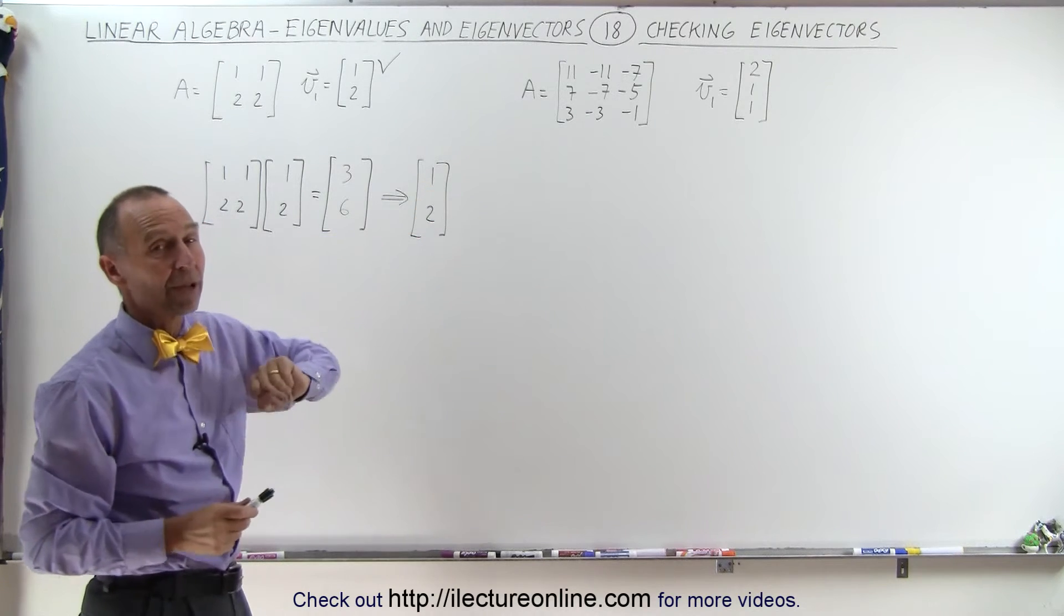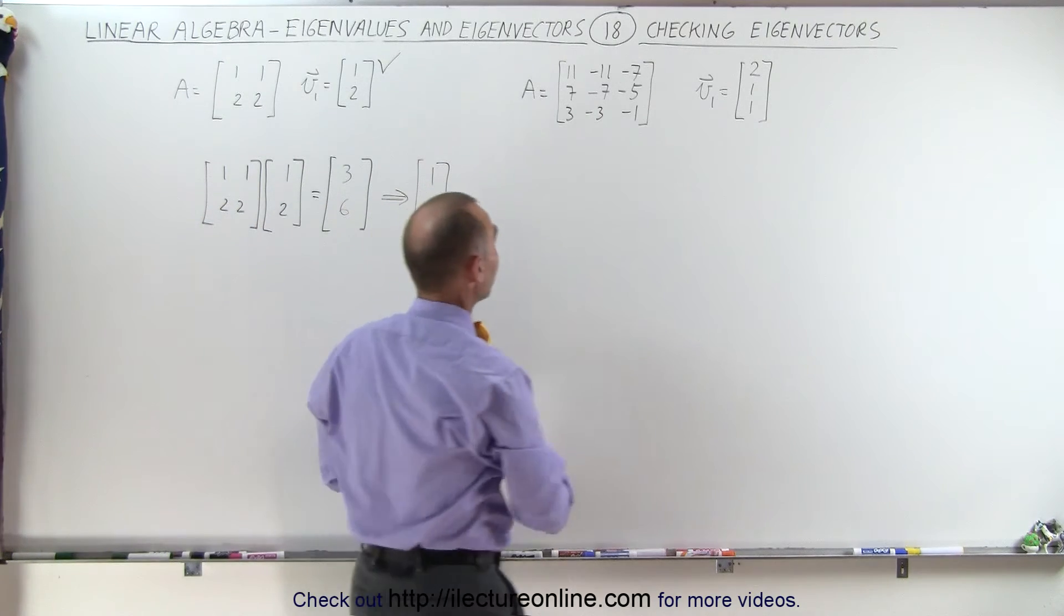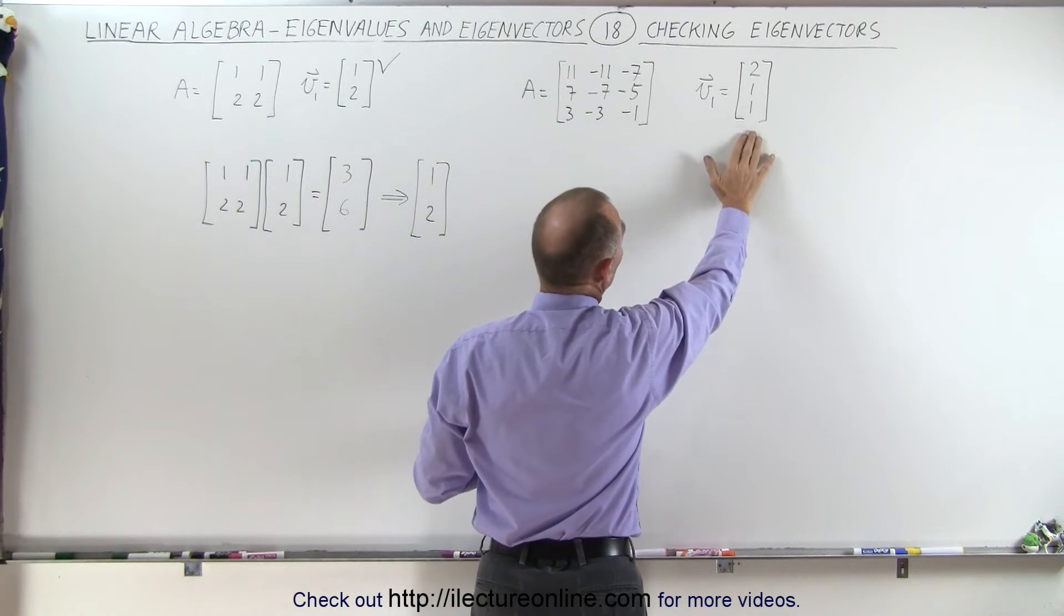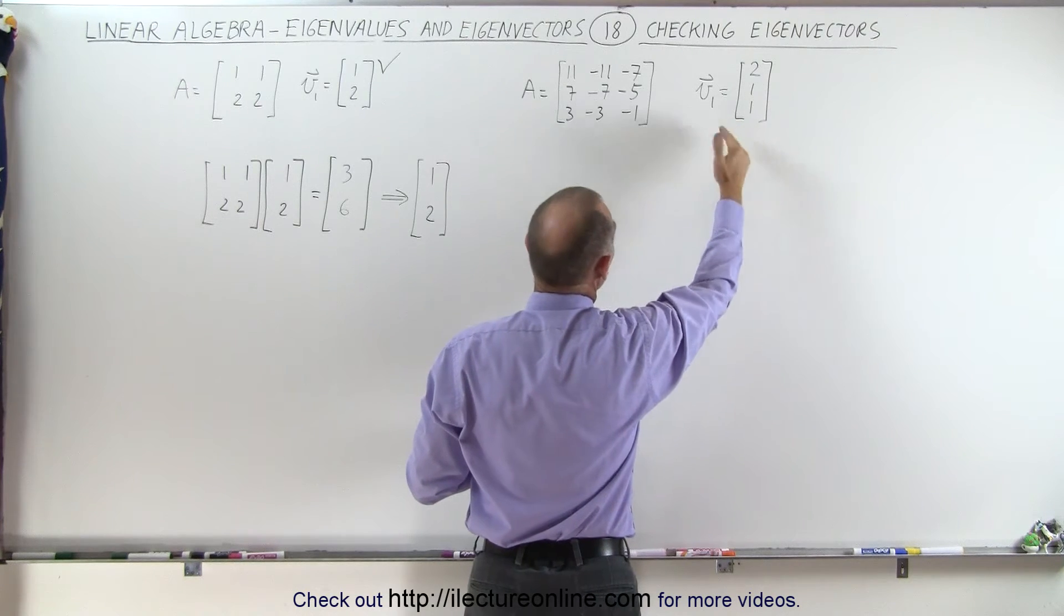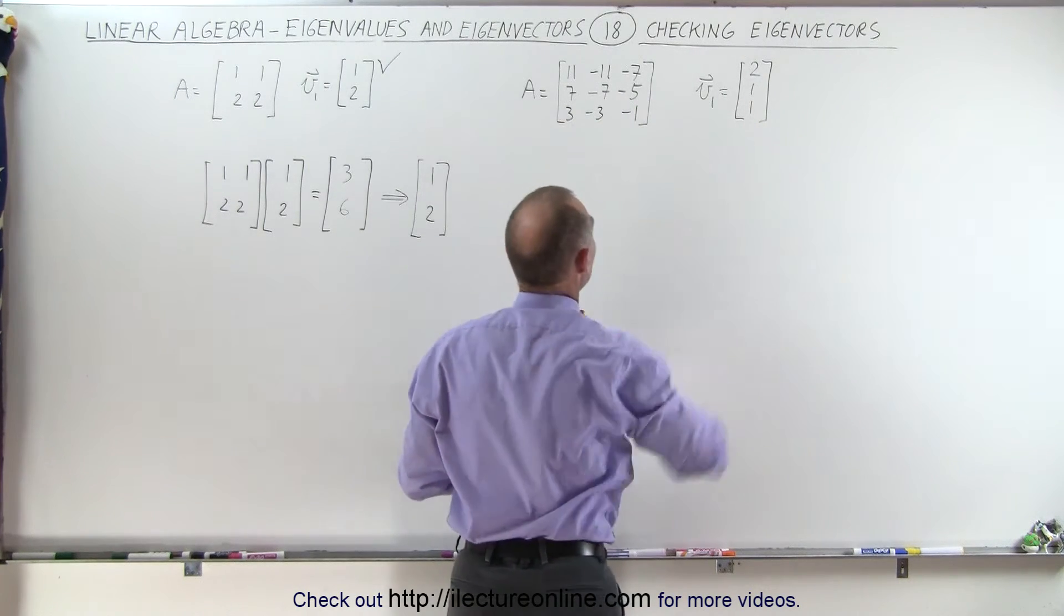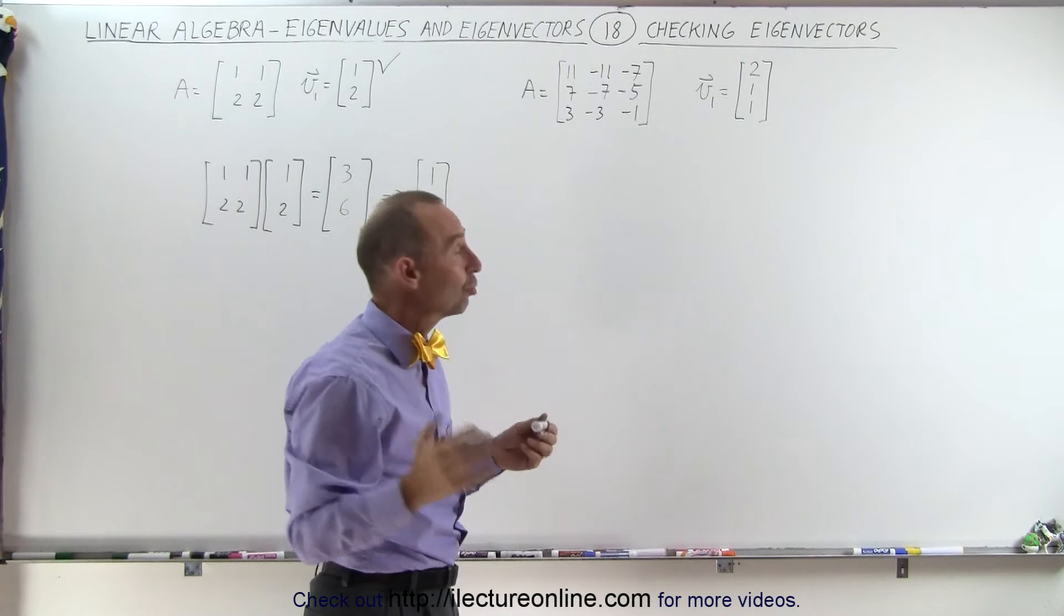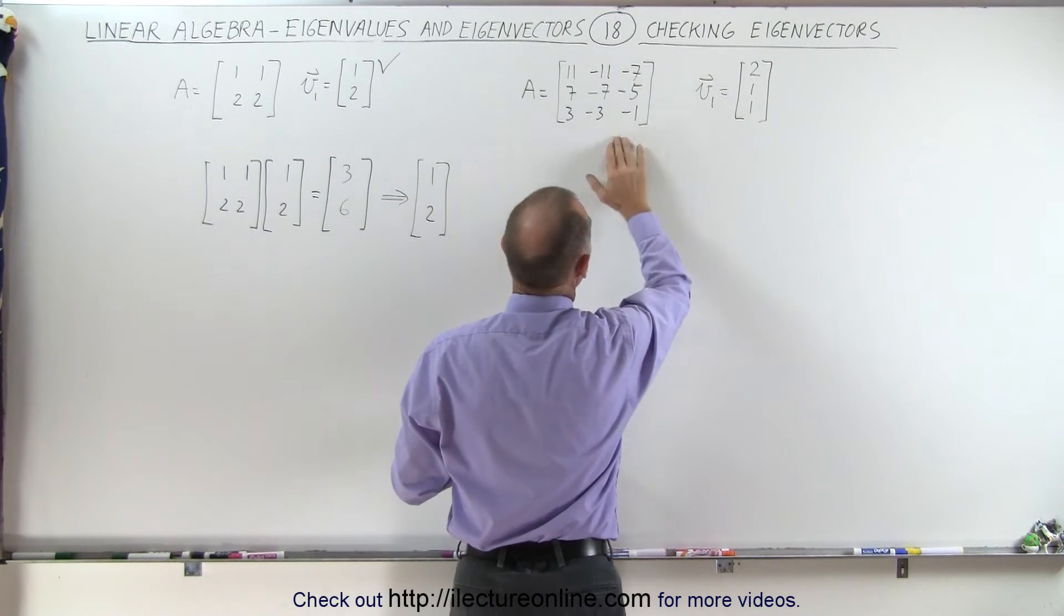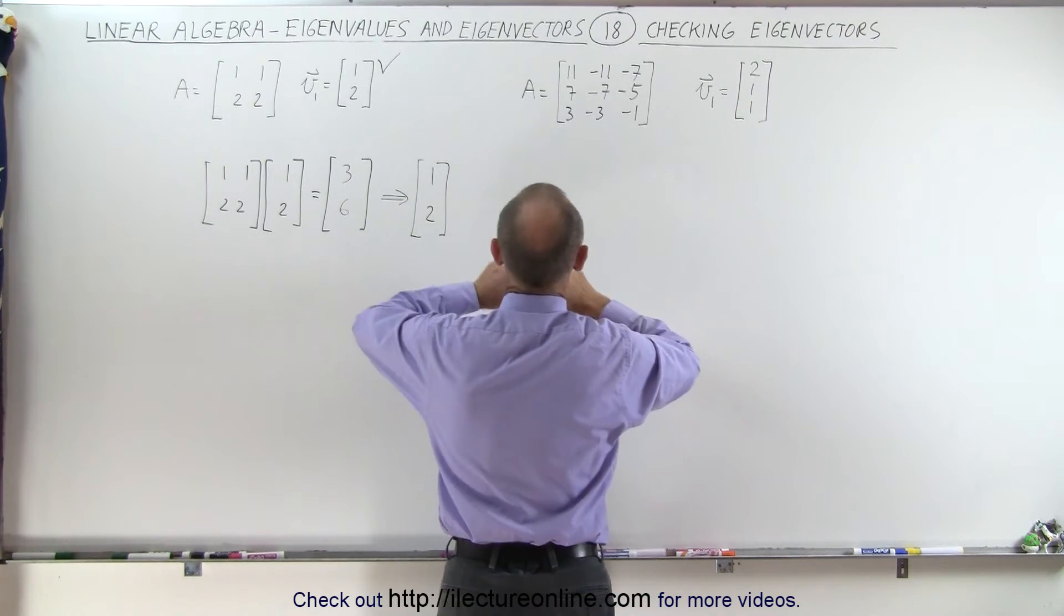Let's do it for a 3 by 3 and see if it works there as well. Again we found this to be the solution of the eigenvector to a particular eigenvalue for this particular matrix. So again we should be able to multiply these two together and get a similar result. Let's try that.